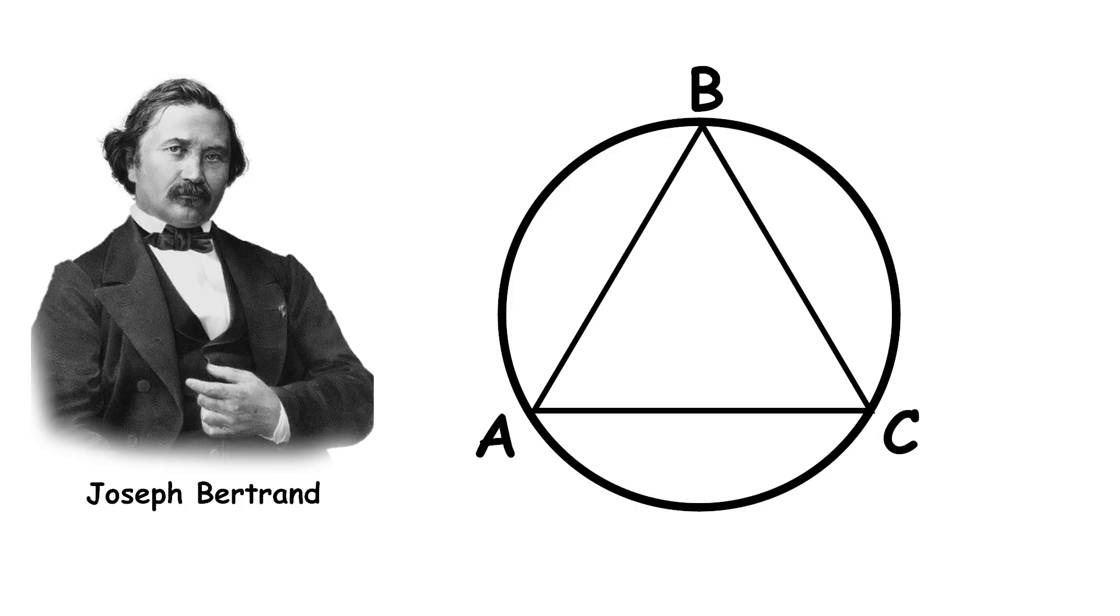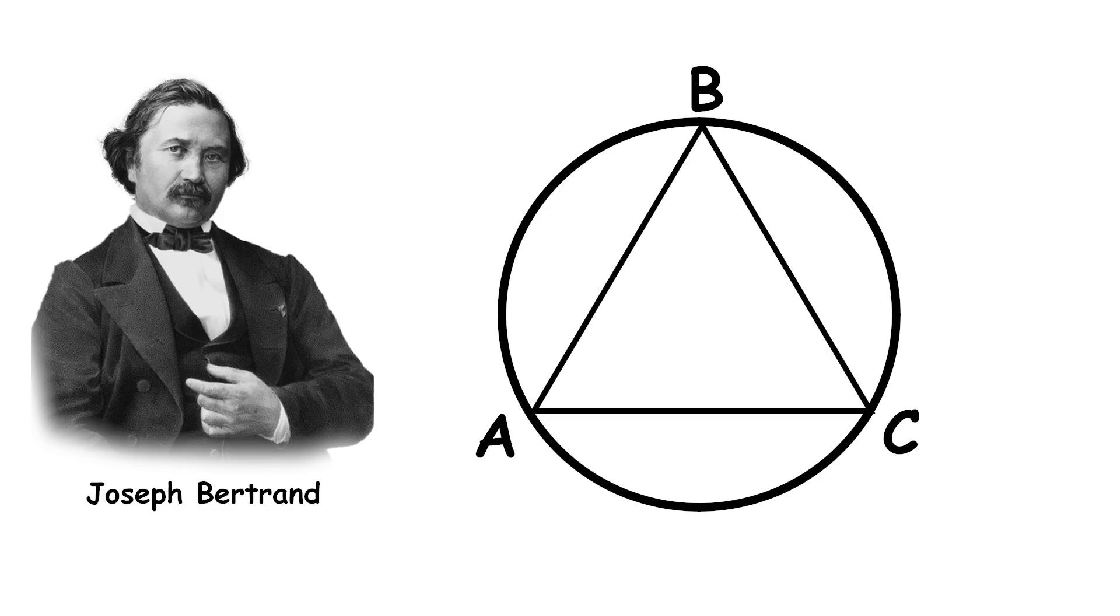Imagine you have a circle with an equilateral triangle in it. Now if you randomly pick a chord, a line connecting two points of a circle, what is the chance that the chord is longer than the side of the triangle? Bertrand came up with three ways to randomly pick a chord in a circle, and each way has a different chance of getting a chord that's longer than a side of an equilateral triangle inside the circle.